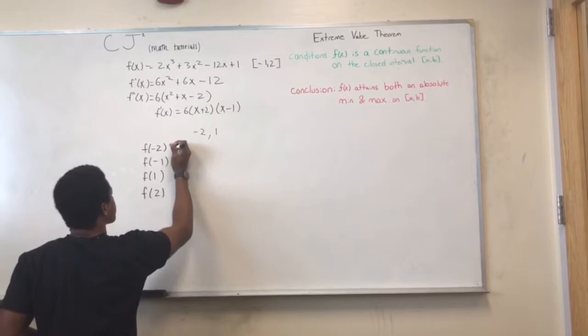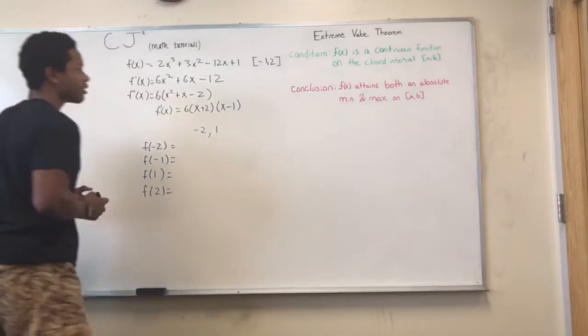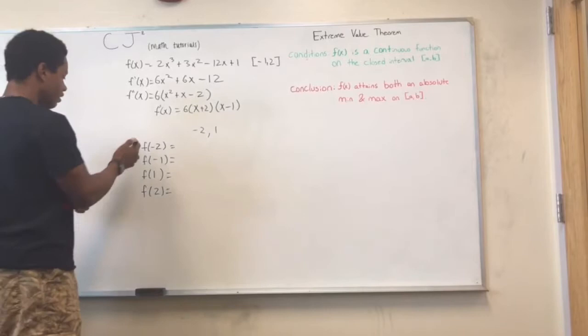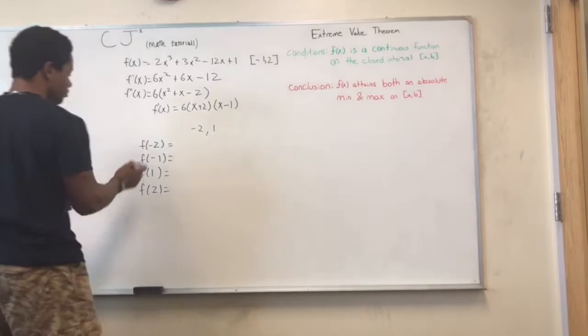But as we can see, we still have to apply the conditions to this function. And we can see that F of negative 2 is not within the closed interval, so we can cross this out.